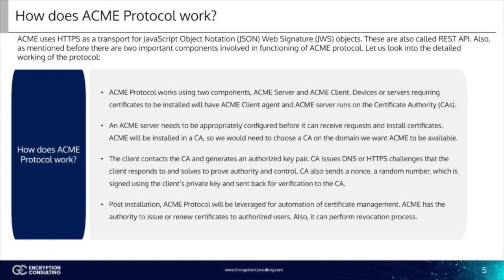Revocation: like the previous process, the agent signs a revocation request sent to the CA. The CA again confirms the request's authenticity and then revokes the certificate, publishing on CRL, OCSP, etc., for the PKI infrastructure.